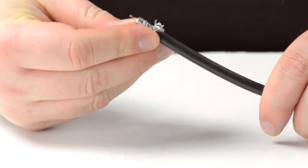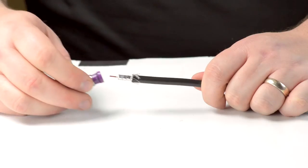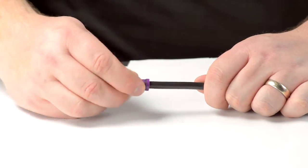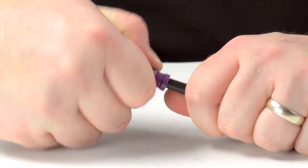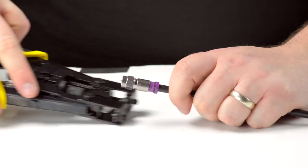Fold back the braided shield and insert the connector housing onto the cable jacket. Apply pressure and twist to make sure the pin is able to reach the end of the connector housing.